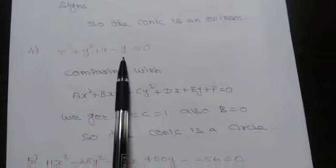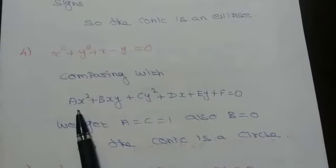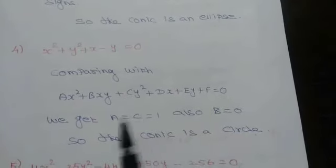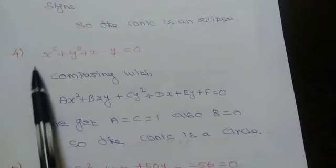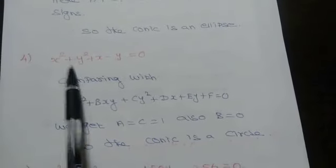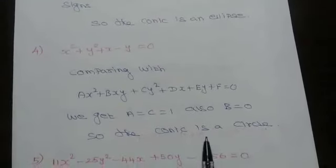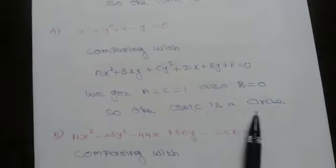Fourth one: x² plus y² plus x minus y equals 0. Comparing to the general conic equation ax² plus bxy plus cy² plus dx plus ey plus f equals 0, a value is 1 and c value is 1, so a equals c equals 1. Also, b is equal to 0. Since a and c are the same sign and same value, we conclude the given conic is a circle.